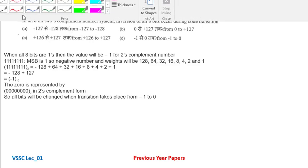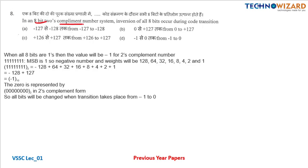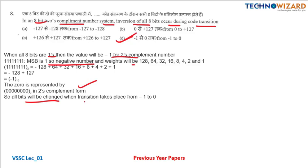Question number eight: in an eight-bit two's complement number system, when all eight bits are one, the value will be minus one. MSB is one, so it is a negative number. The range is minus 128 to 127. Minus one is represented by all ones in two's complement form, and all bits change when transition takes place from minus one to zero.